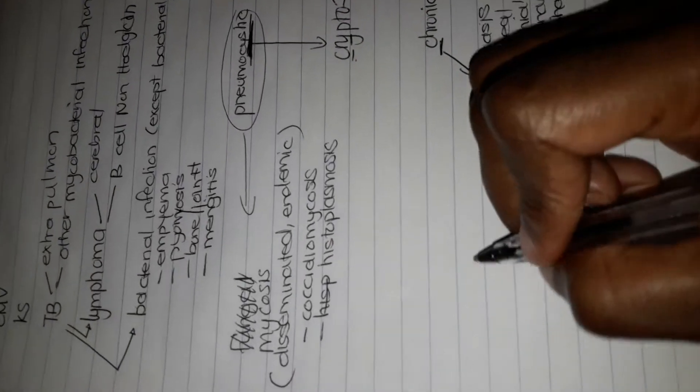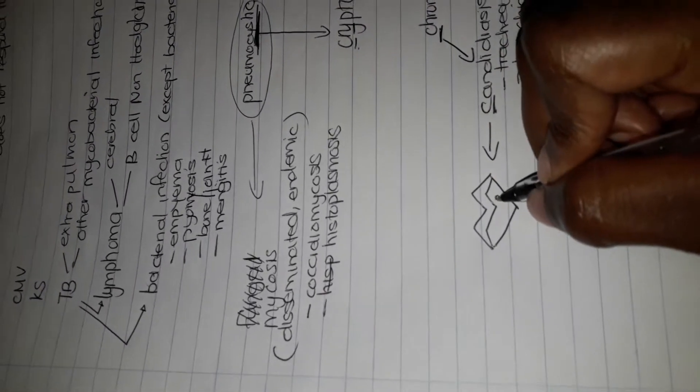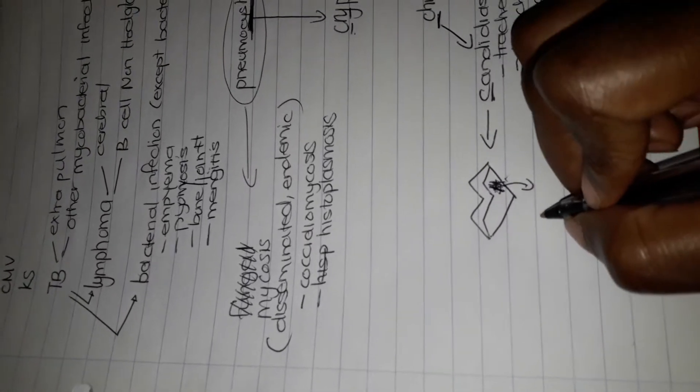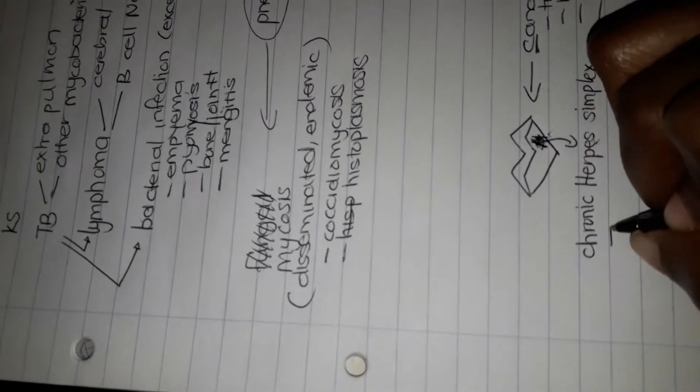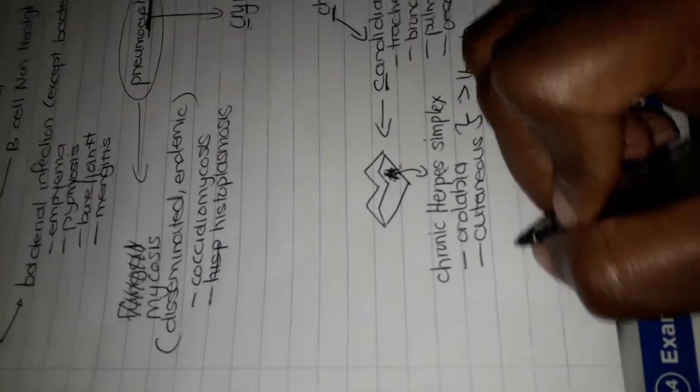When you think of candidiasis, where do you put the candy? In the mouth, right? When I think of the mouth, I just put a little blister there. This blister reminds me of herpes simplex, not zoster like we had in the first picture, not herpes zoster like we had in Stage 2, but herpes simplex is part of Stage 4. This herpes simplex has to be chronic and it can be oral labial, it can be cutaneous, but then it has to be for at least more than one month, and it can also be visceral.